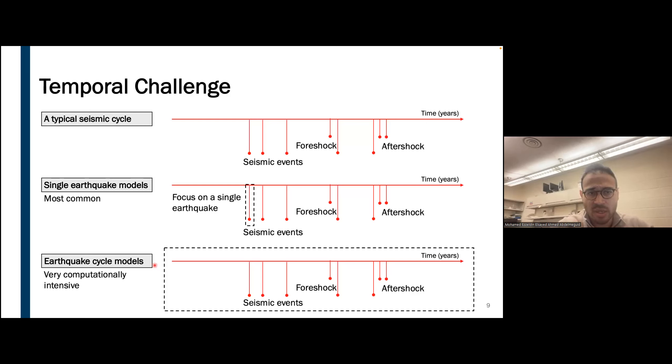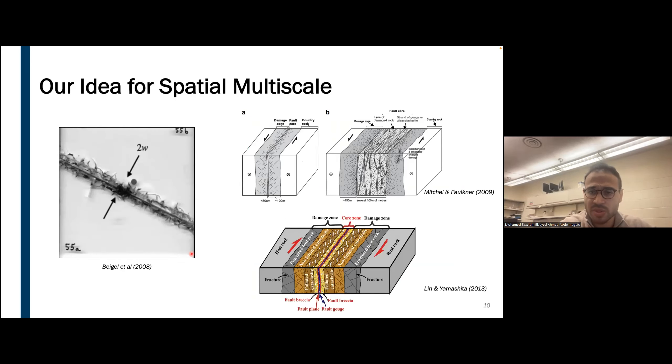Our idea to handle this computational cost is basically we focus on this local heterogeneity. Instead of modeling the actual problem, which is kilometers of scale with really fine resolution near the fault surface, instead of discretizing this full volume, we just discretize a small portion that contains this heterogeneous behavior and use a boundary element approach with a non-fundamental solution to capture the behavior of the rest of the domain. This significantly reduced the computational cost and allows us to use higher resolution within this region to capture fine scale features.